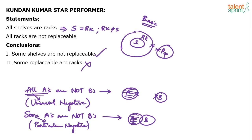Some shells are not replaceable — remember, when all shells are not replaceable, I can also say some shells are not replaceable. I can pick some of these shells and say these shells are not replaceable. Many who marked conclusion one as wrong assumed the answer must be 'all shells are not replaceable,' making 'some shells are not replaceable' seem incorrect. But if all shells are not replaceable, I can still say some of these shells are not replaceable — like asking someone with a thousand rupees if they have two hundred rupees.